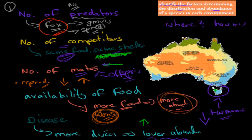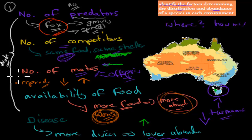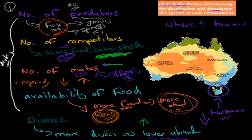All of these were biotic factors. Biotic means living. So number of predators, number of competitors, number of mates, availability of food, and disease — these are all living things, and this is how living things can affect a species.